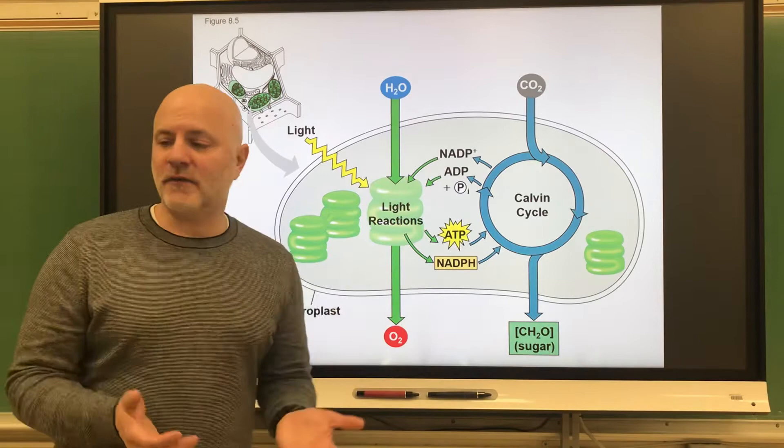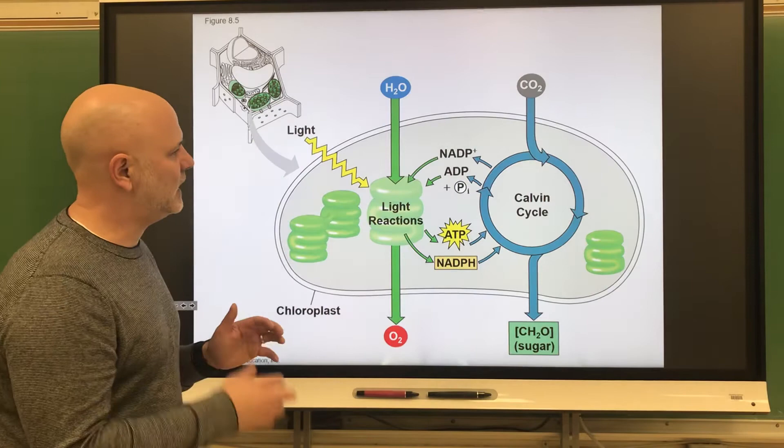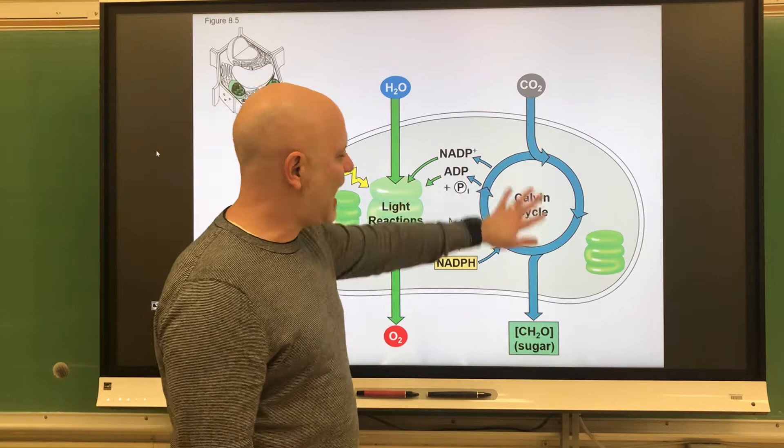Moving on to the photosynthetic reactions, let's first look at the light reactions. There are two main groups of reactions that occur in photosynthesis: first, the light reactions, which absorb sunlight energy, and then the carbon reactions, which is mainly the Calvin cycle — and that's where we make the sugars.